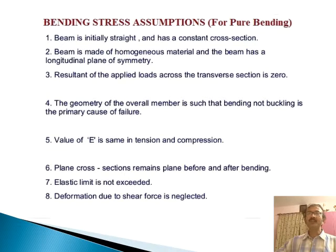Number four, the geometry of the overall member is such that bending, not buckling, is the primary cause of failure. Number five, value of E, that is modulus of elasticity, is same in tension and compression. Number six, plane cross sections remain plane before and after bending. Number seven, elastic limit is not exceeded. And number eight, deformation due to shear force is neglected.